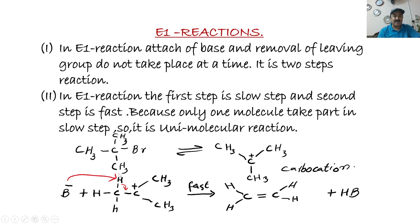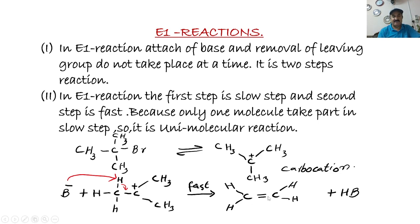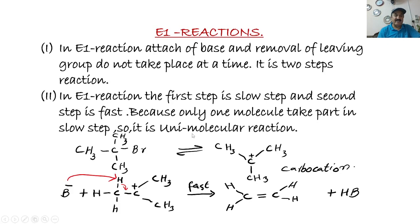The second step is a very fast step. B⁻, the nucleophile acting as a base, removes a hydrogen from the beta carbon and produces an alkene plus HB. The rate of an E1 reaction depends only upon the concentration of the alkyl halide, because only the slow step determines the rate.